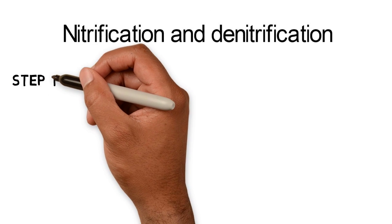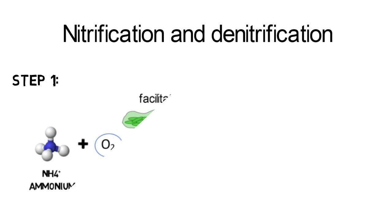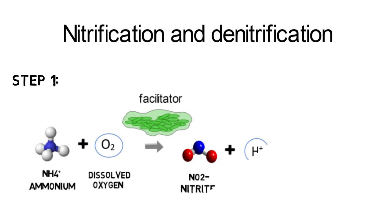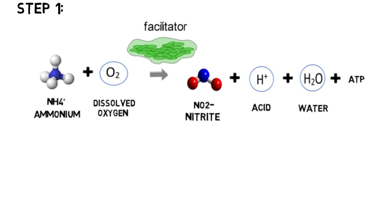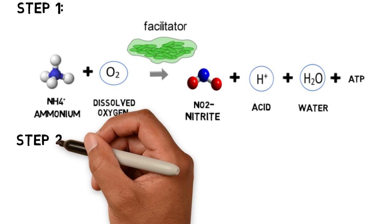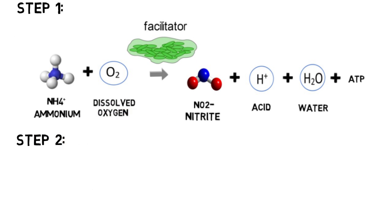The conversion from ammonia nitrogen to gaseous nitrogen N2 is called nitrification and denitrification. In a first step, nitrifying bacteria facilitate the oxidization of ammonium into nitrite, acid, water, and ATP. Afterwards, nitrite is further oxidized into nitrate and more ATP.